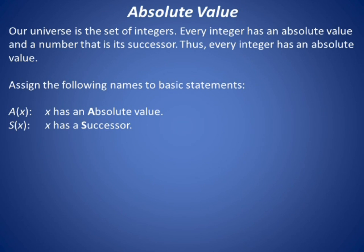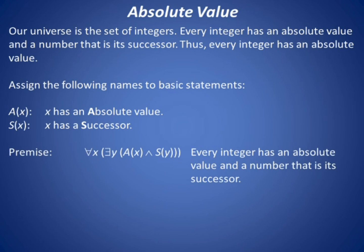From the story and these predicates, we may represent the premise as for all x, there exists a y, so that A of x and S of y. In English, that is, every integer has an absolute value and a number that is its successor. The conclusion we seek is for all z, A of z. That is, every integer has an absolute value.